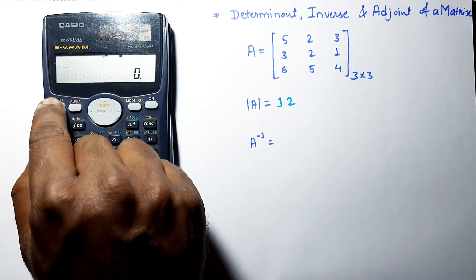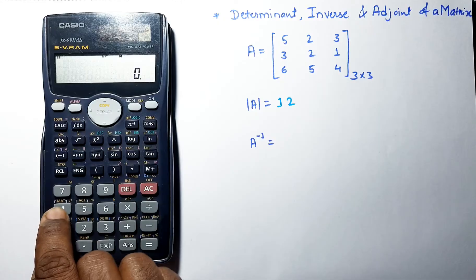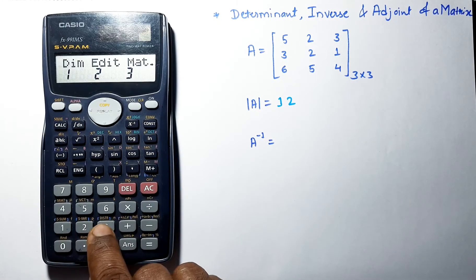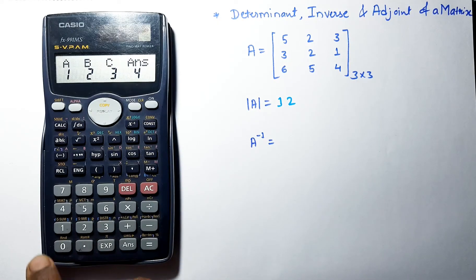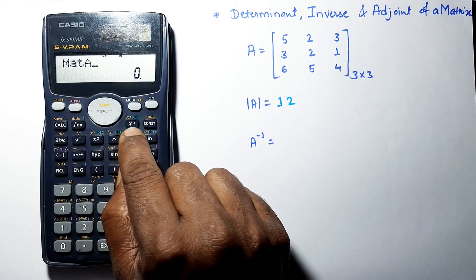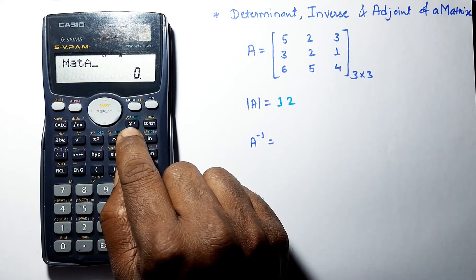We get the value of the determinant as 12. Let's write that down. Now we have to find the inverse of the matrix.